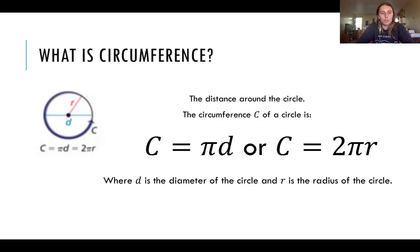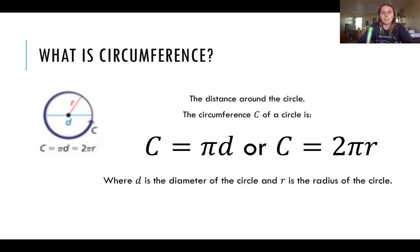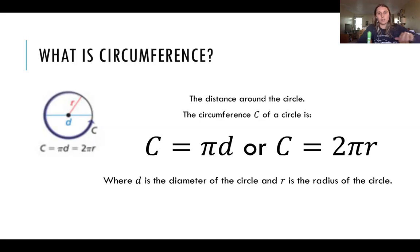D is the diameter of a circle. So if you have the diameter, then you can find the circumference, and R is the radius. If you don't have the diameter but you have the radius, you can still find the circumference of the circle — you just double it: two pi R. So either way, whichever one you have, you can find your circumference.